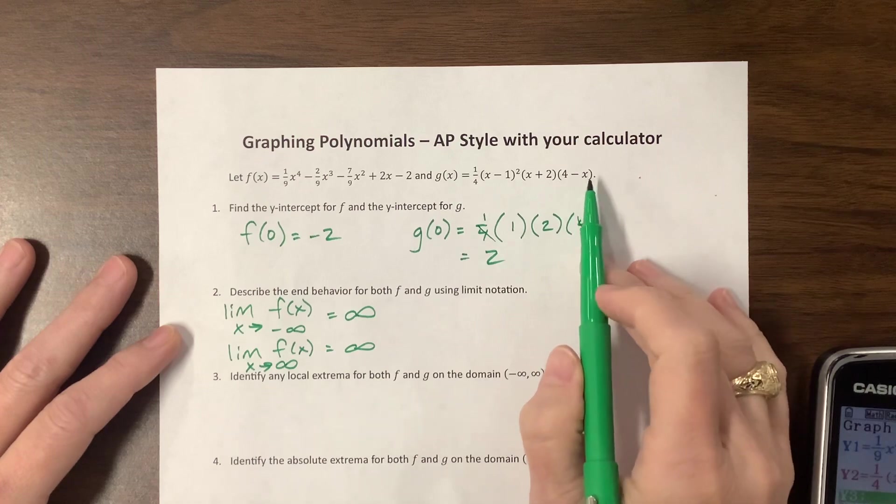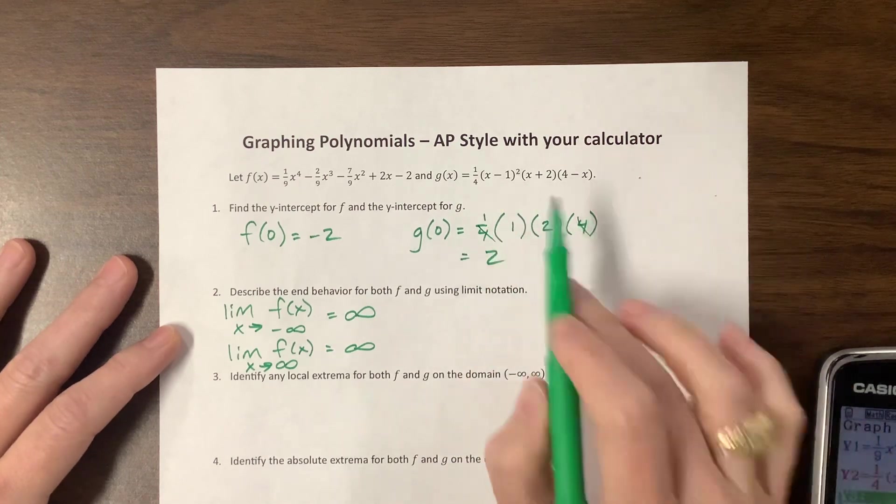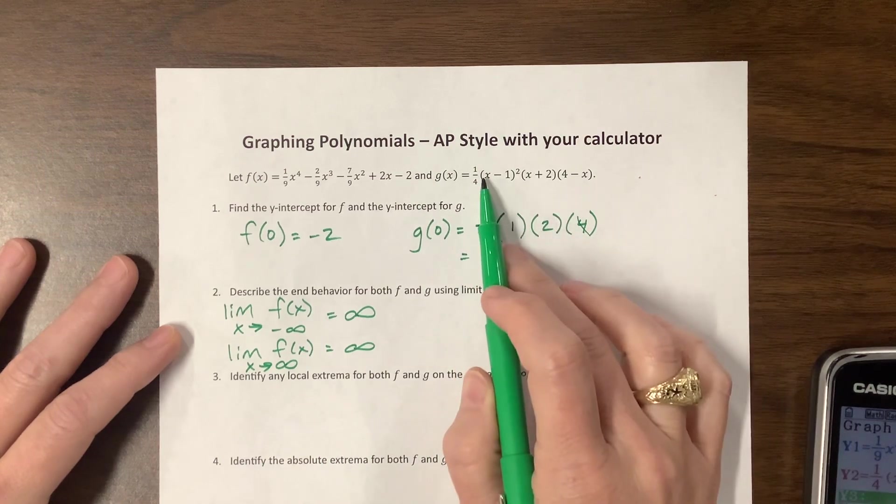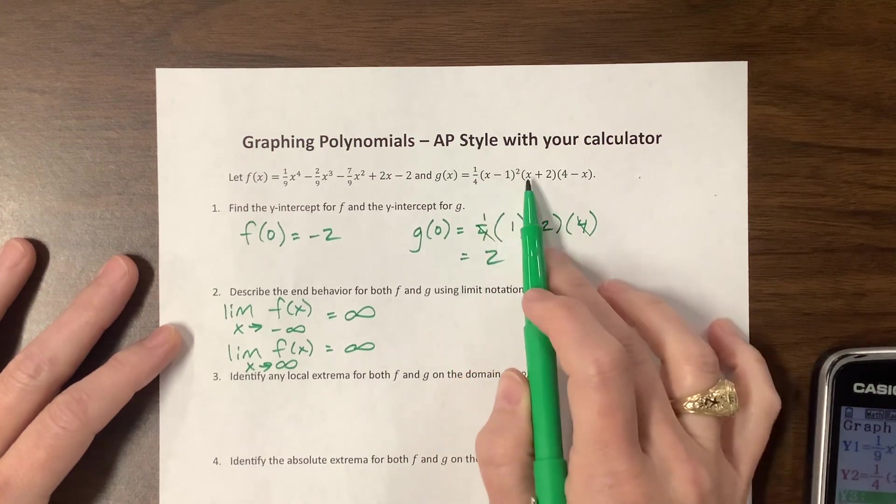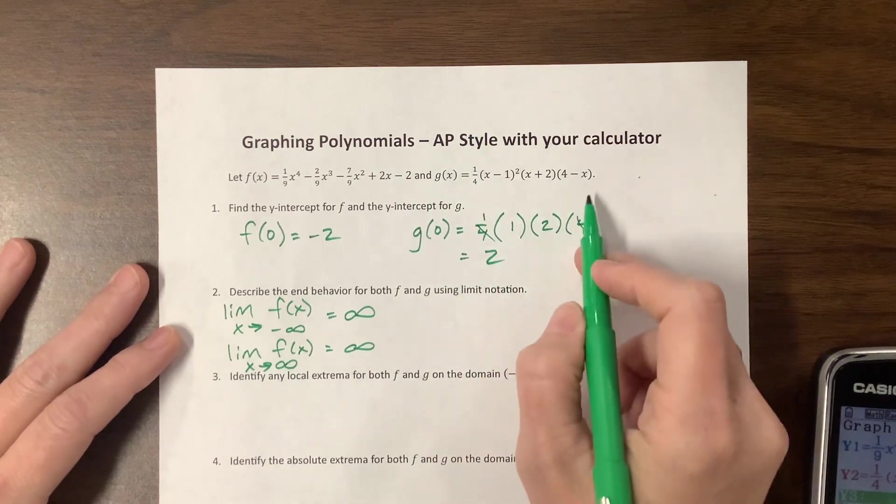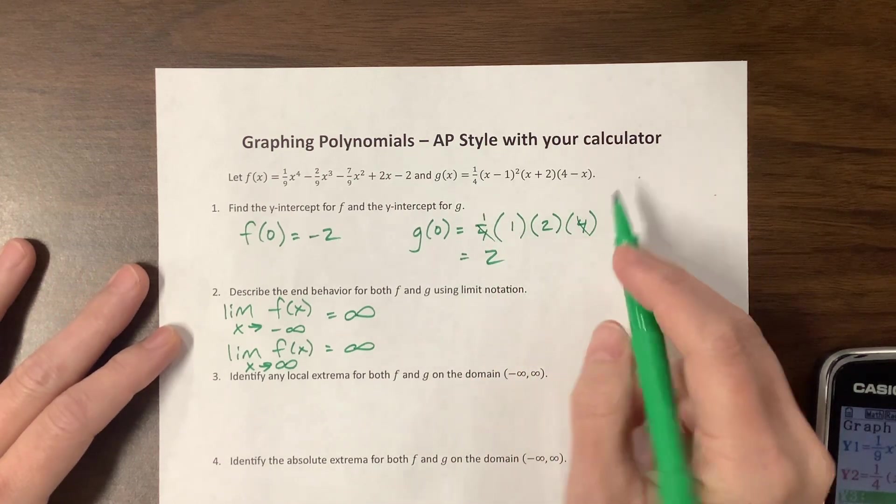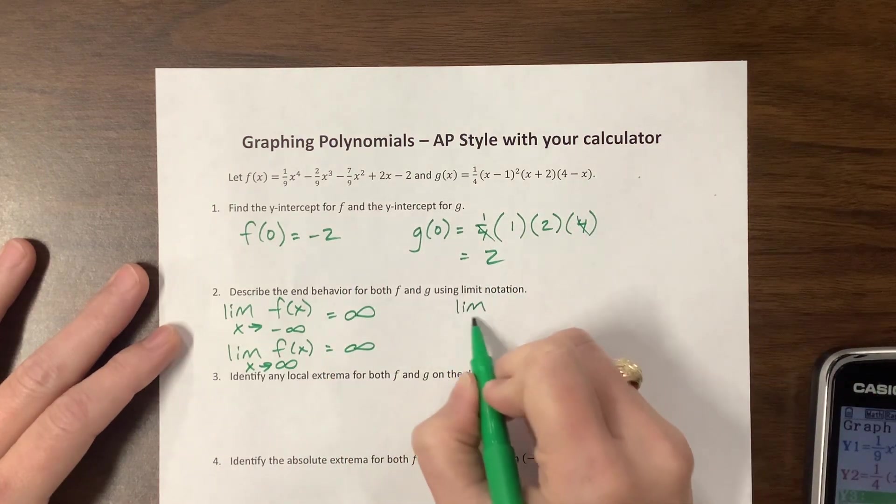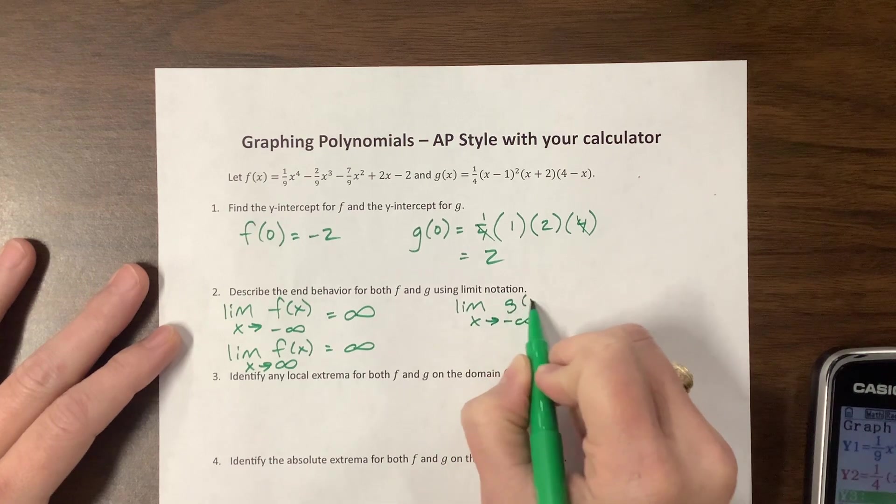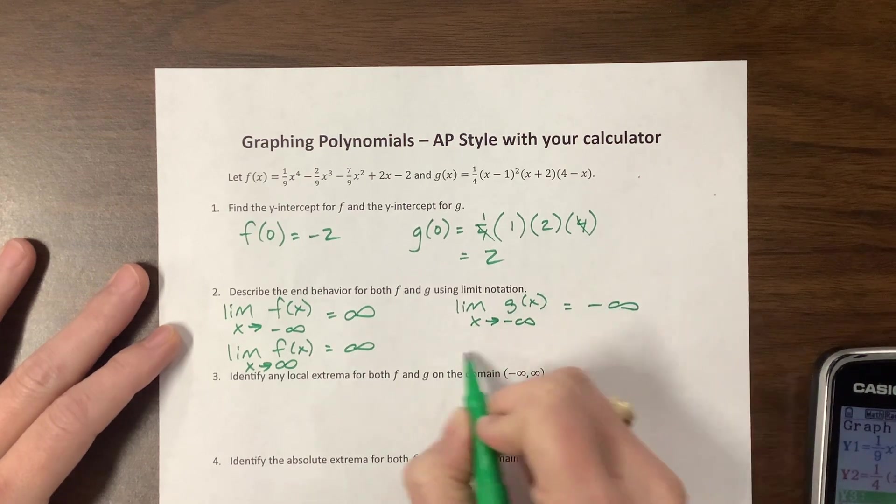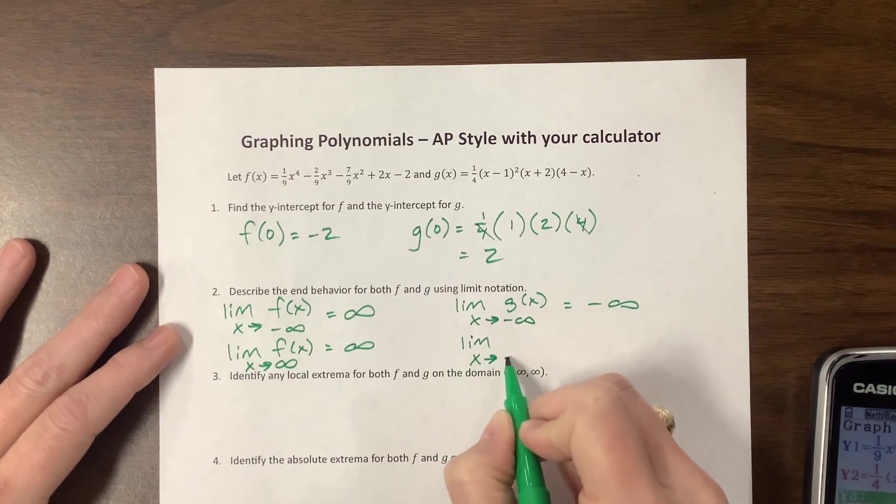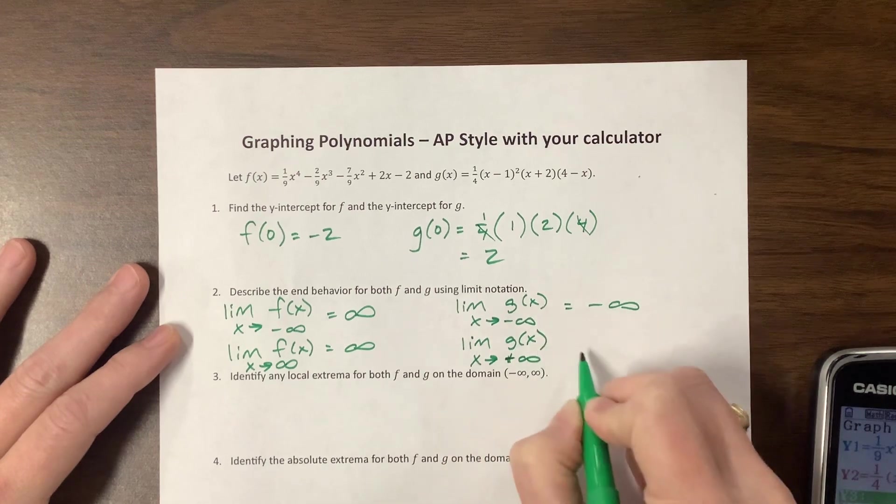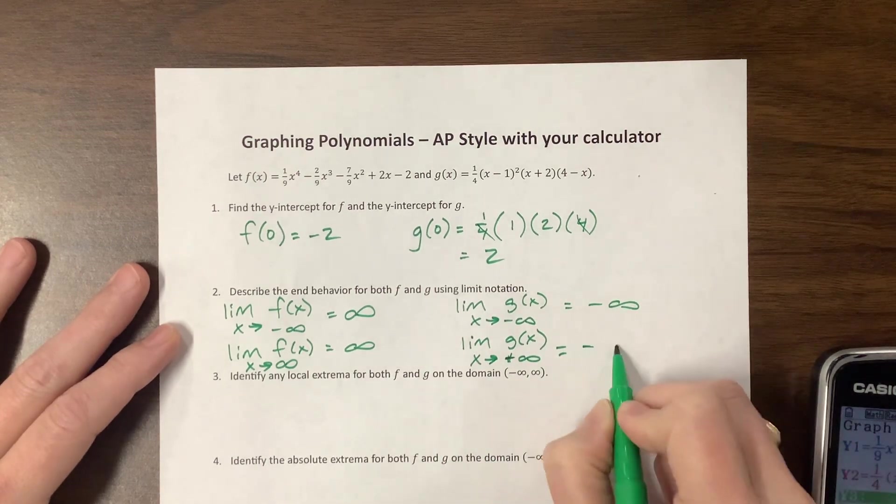This one, I need to look at it. I see one, two, three, four x's, so this is also an even degree. Notice there's two positive x's here, so positive, positive, positive, and a negative x. So now this is even but it's got a negative leading coefficient if we multiplied it all out. So the limit as x goes to negative infinity of g(x) is going to be negative infinity. The limit as x goes to positive infinity also goes to negative infinity.